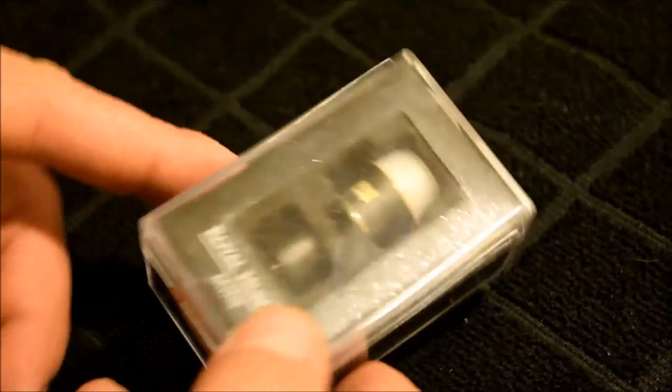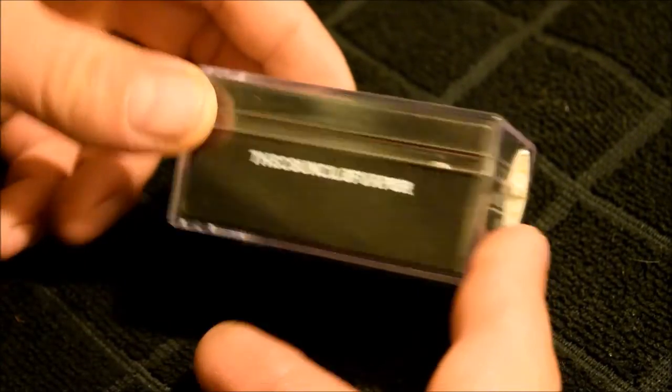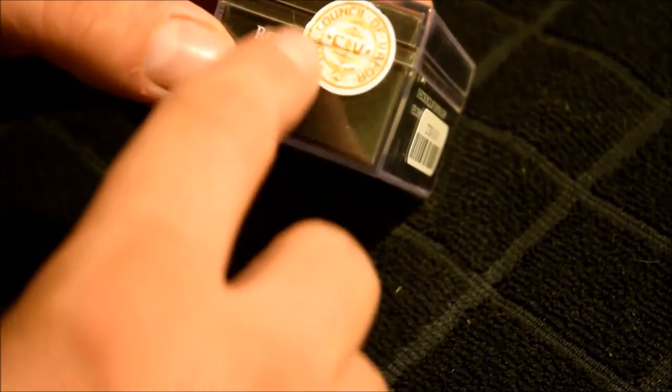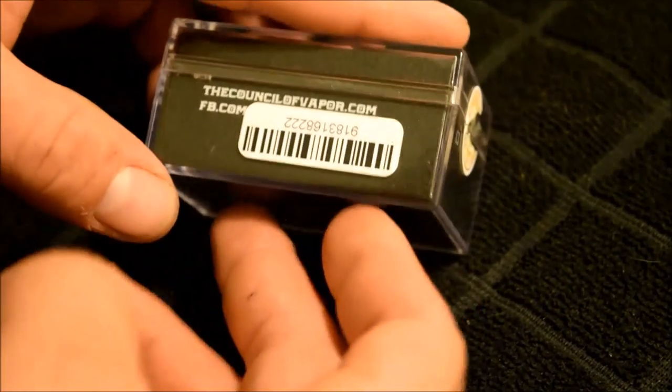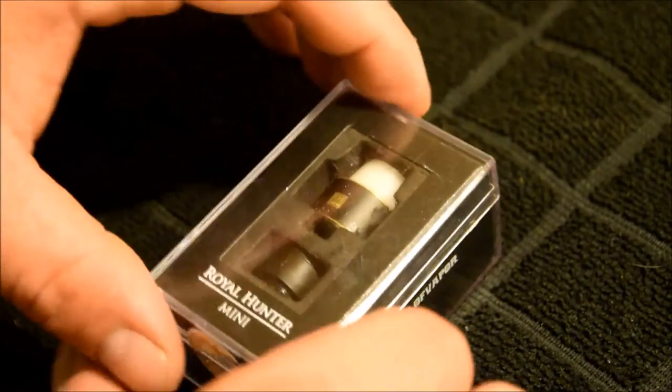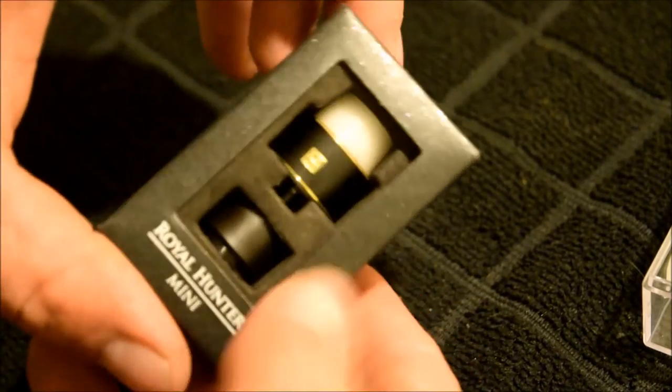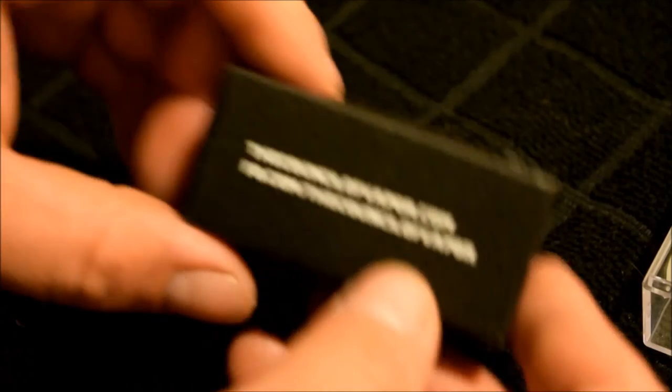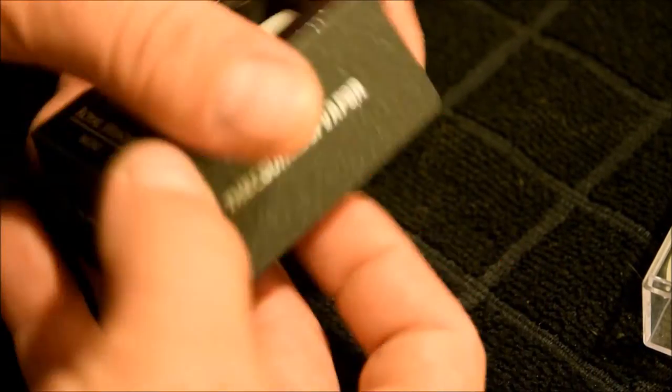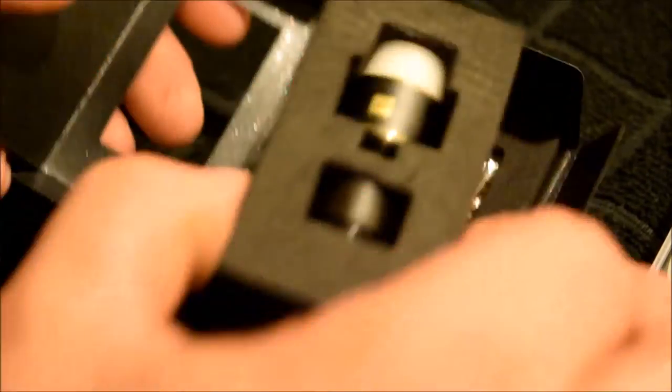Okay, so when you purchase the Royal Hunter Mini, this is the case. Council of Vapor. A little authenticity sticker. Their Facebook, it's underneath the cereal bar right here. So there's the RDA. Open it up like so. It's in a little box. It's got this fancy little fold going here. All you do is, oh there you go. There's their Facebook. Open it up. And we have the RDA. So there's your packaging.